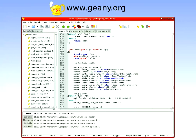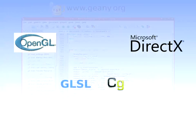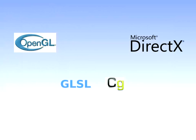The 3D engine of Panda 3D is a wrapper around OpenGL and DirectX. It supports CG and GLSL shaders. In other words, you can do anything you could do with another OpenGL or DirectX engine. The limit is your knowledge.